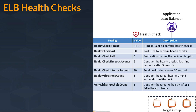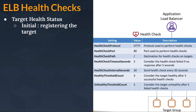Next is unhealthy threshold count. Before considering a target unhealthy, the health check would be performed 5 times — suppose you have a value of 5. The health check is done 5 times before considering a target as unhealthy. So that unhealthy threshold count decides the target health status.